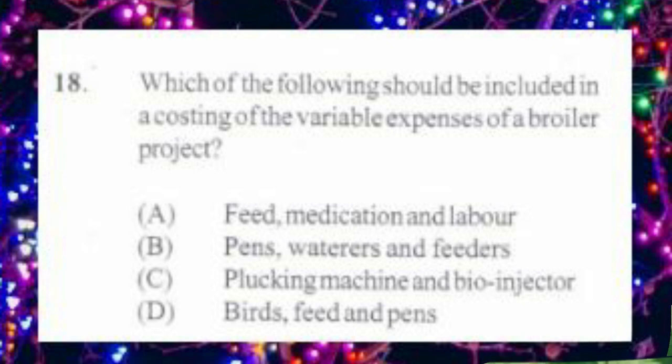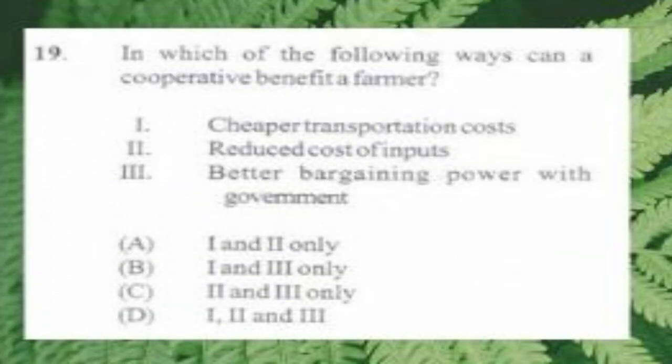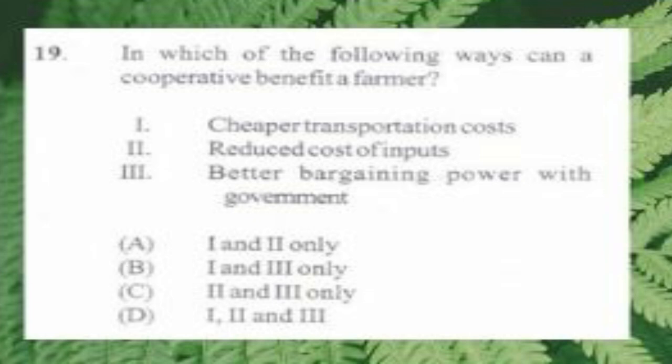Question number 19. Which of the following ways can a cooperative benefit a farmer? 1. Cheaper transport cost, 2. Reduced cost of inputs, 3. Better bargaining power with government. A. 1 and 2 only, B. 1 and 3 only, C. 2 and 3 only, D. 1, 2 and 3. The answer is B, 1 and 3 only. Of course, cooperative members are not in control of inputs.